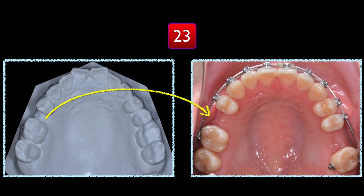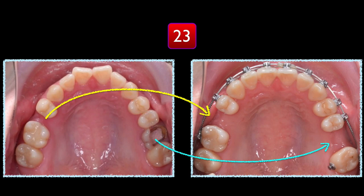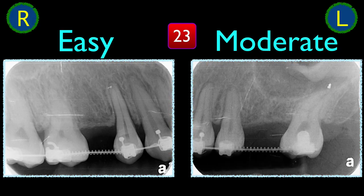So 23 months in treatment, we'll be able to solve the major problem and set up a good structure for implant placement. For the right side, it's the second premolar, and the left-hand side is the first molar. For the right-hand side, it's quite easy because the depth is okay. But for the left-hand side, because the sinus floor is quite low, I think the difficulty level is moderate.